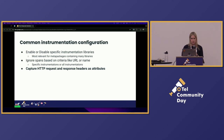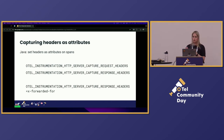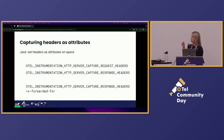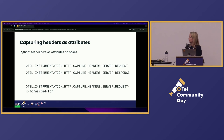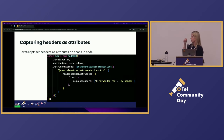One thing coming up more often is that folks want HTTP request and response headers available as attributes on their spans. Java and Python have a very similar option for capturing request and response headers and describing which headers you want. The Python and Java environment variable names are both very long but slightly different from each other, so you'll want to check those carefully. For JavaScript, this is mainly available in code — it's not yet available as an environment variable option, but if you're configuring instrumentation in code you have those options available.